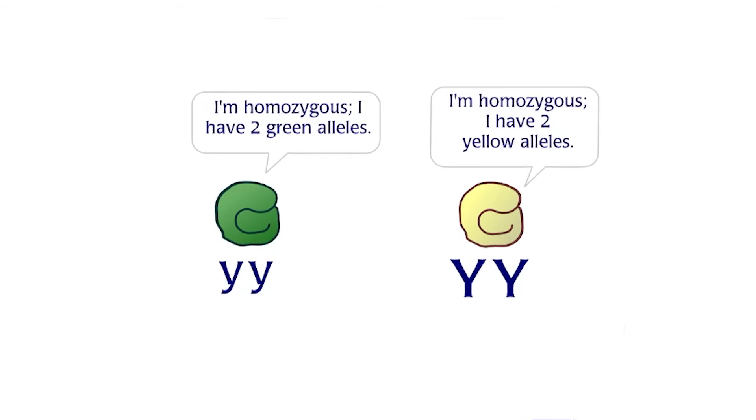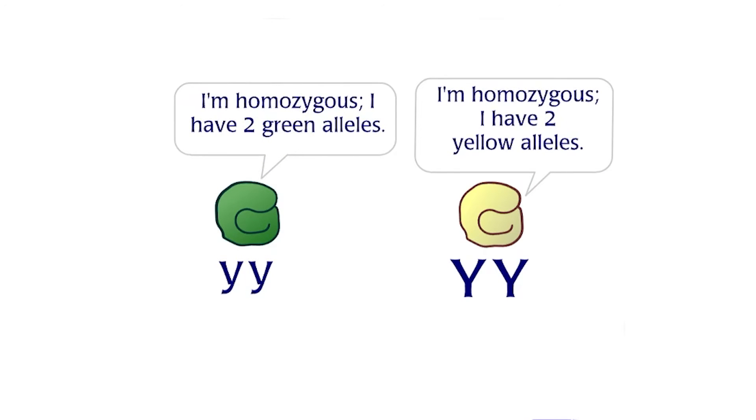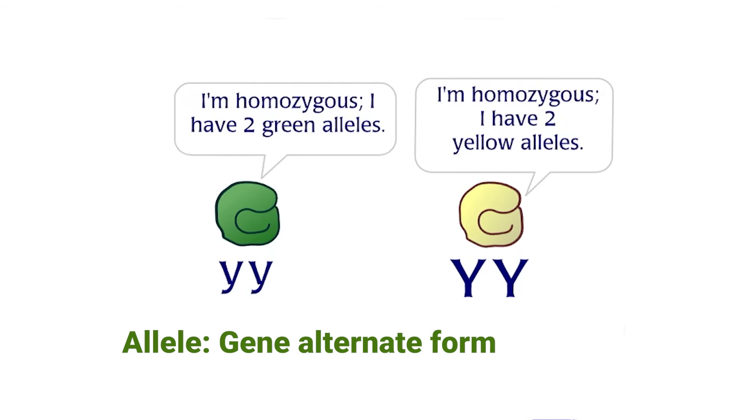In these experiments, he found that pea color is controlled by one gene which has a green and a yellow form called alleles. Mendel proposed that purebred green has two green alleles, represented as small y, while purebred yellow has two yellow alleles, represented as capital Y.